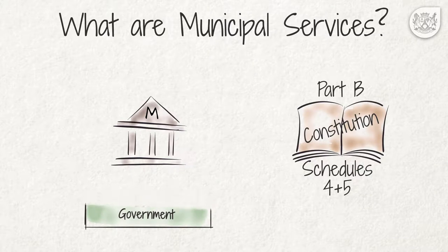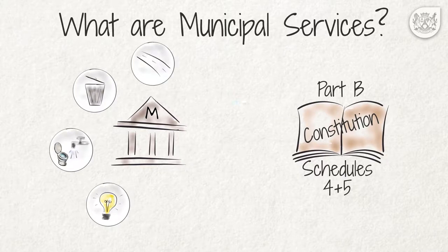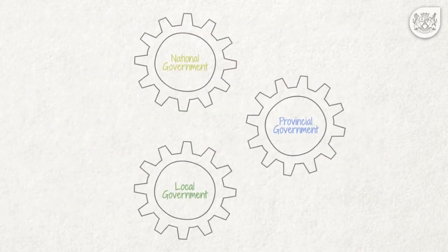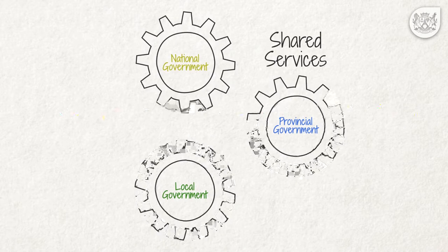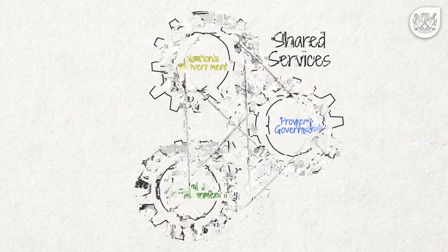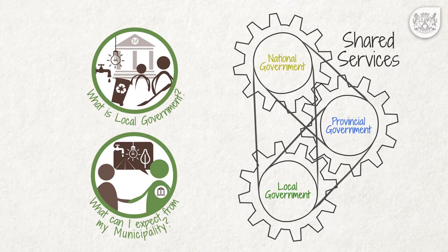These services include electricity, water and sanitation services, refuse removal, municipal roads, parks and recreation, community halls and public places, and cemeteries. Some services are shared services, meaning that different spheres of government have to collaborate in providing them. This is discussed in the videos 'What is local government?' and 'What can I expect from my municipality?'